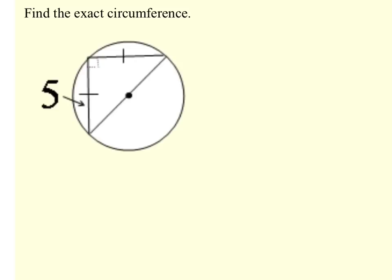In this problem, we are asked to find the exact circumference. Now, when it says that word exact, it means that you're going to leave your answer in terms of pi. You're not going to put it into your calculator and multiply it out.